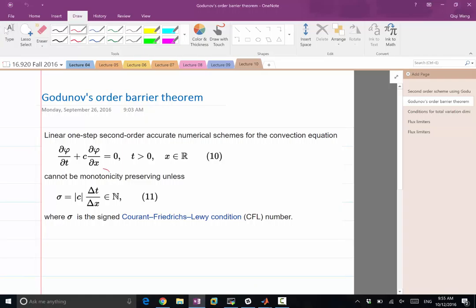So monotonicity means the total variation is less or equal to zero, which means the monotonicity of total variation over time. So the total variation has to be monotonically non-increasing over time. That's what it means.